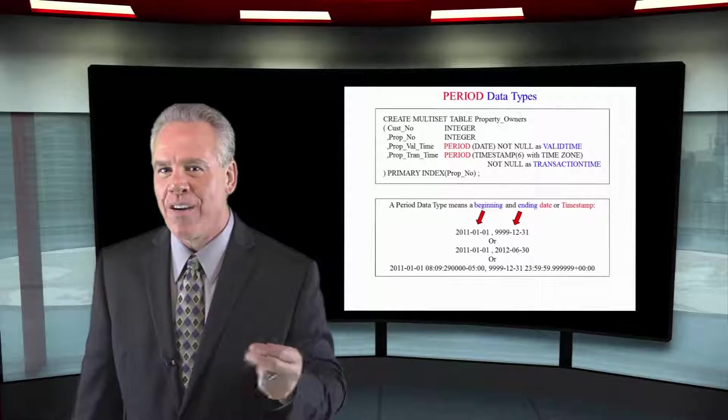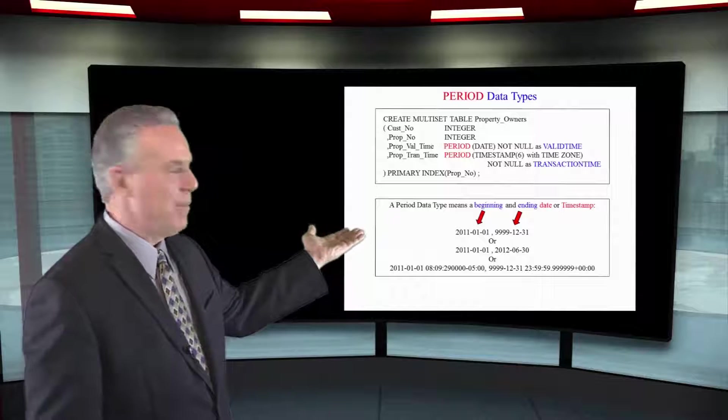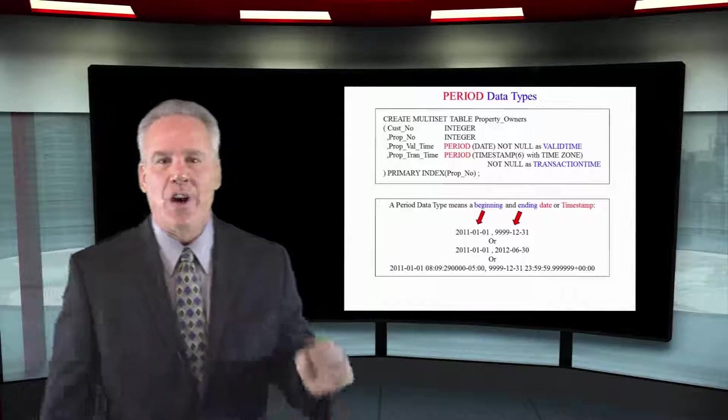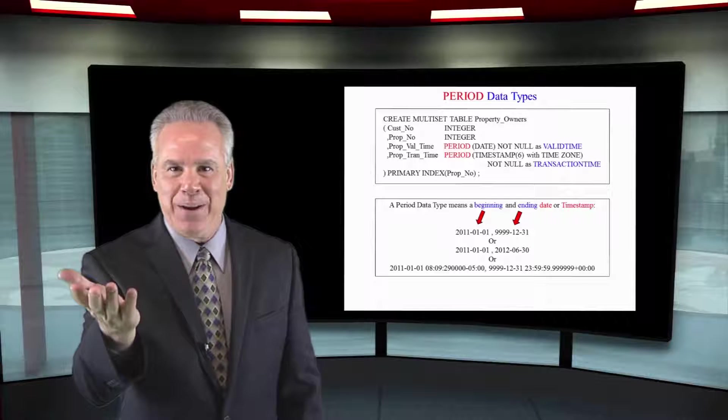Taking our example further, I've highlighted the data type for valid time and transaction time. They are period data types. A period data type will present two periods of time: a beginning period and an ending period.